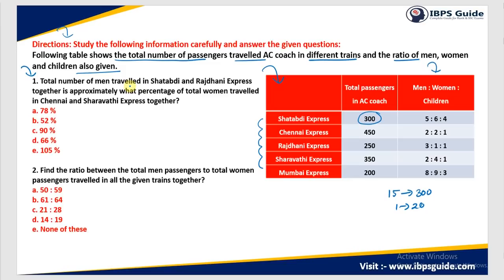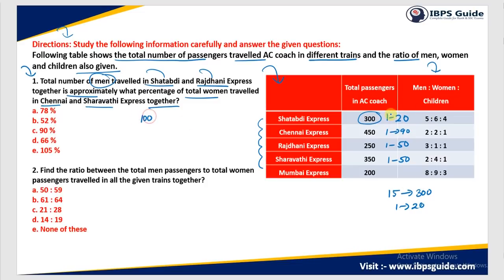Question 1: The total number of men traveling in Satabdi and Rajdhani Express is approximately what percent of the total women traveled in Chennai and Saravati Express together? Men in Satabdi: one part is 20, so men (5 parts) = 100. For Rajdhani, total parts = 5, and 5 parts = 250, so one part = 50. For Saravati, six plus one = seven parts, seven parts = 350, so one part = 50. For Chennai Express, two plus two plus one = five parts, so one part = 90. Men in Rajdhani = 3 parts = 150. Total men = 100 + 150 = 250.